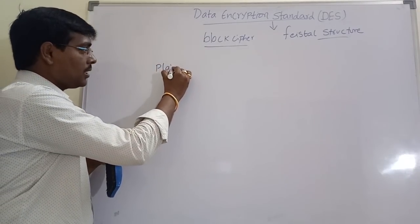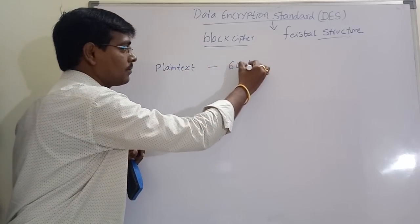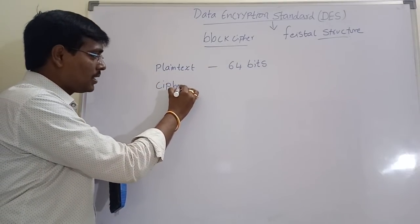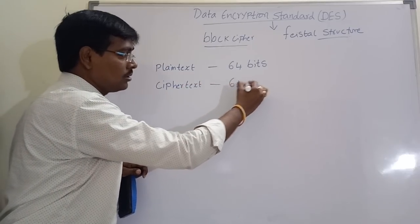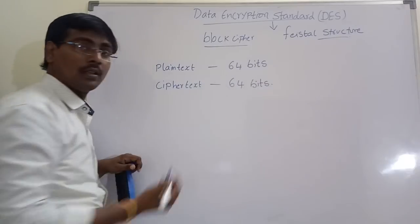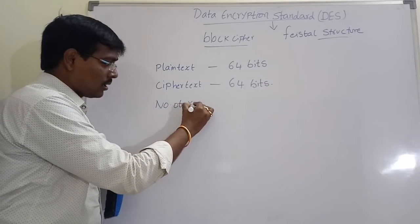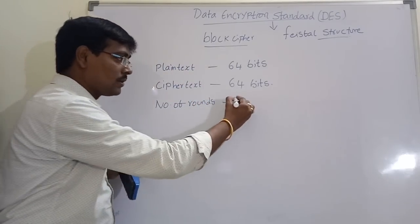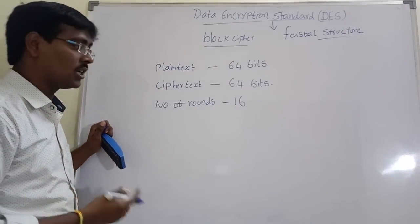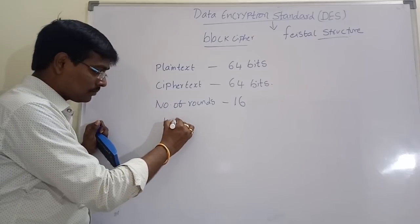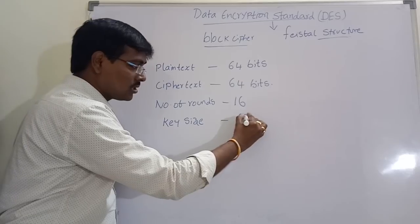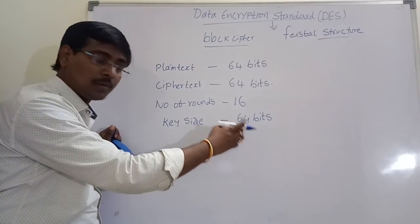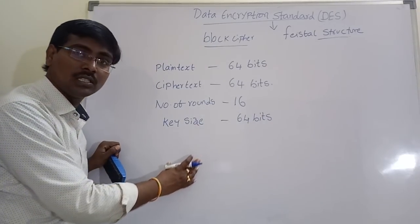Coming to DES, the size of the plaintext is 64 bits, and the size of the ciphertext is also 64 bits. The number of rounds — that is, the number of times we have to perform encryption or decryption — is 16. The key size is 64 bits; in some books it is referred to as 56 bits, and I will explain later how 64 is converted into 56.